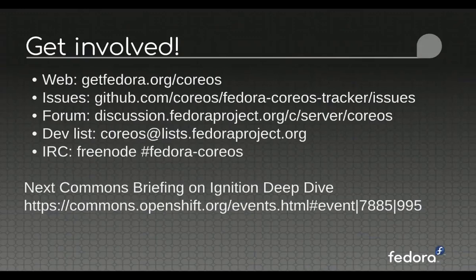We're nerds, so we hang out on IRC — feel free to hop into Freenode. There's also the developer mailing list. The next Commons briefing on ignition is August 28th, and we'll do a deeper dive there. By then the FCCT — the Fedora CoreOS Config Transpiler — will likely have some cool bells and whistles added, so that'll be a really cool talk.